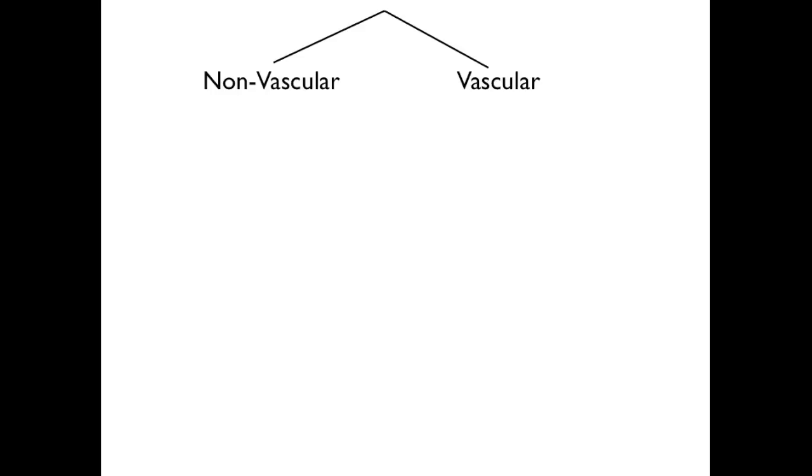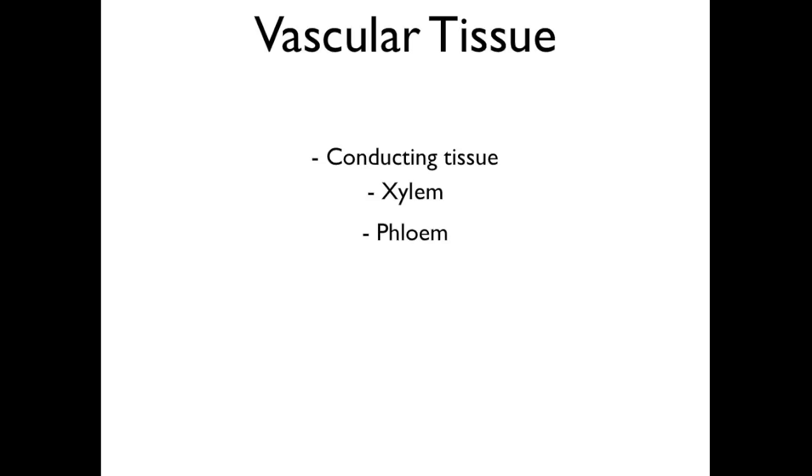The first way we classify plants is by whether or not they have vascular tissue. You'll recall that vascular tissue is conducting tissue and contains xylem and phloem. Vascular tissue also contains vascular cambium and cork cambium, but if you just remember xylem and phloem, you'll be all set.